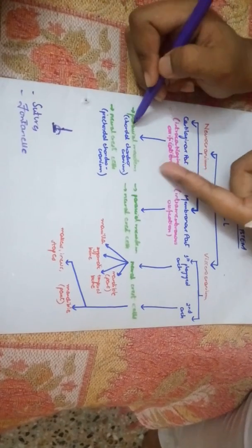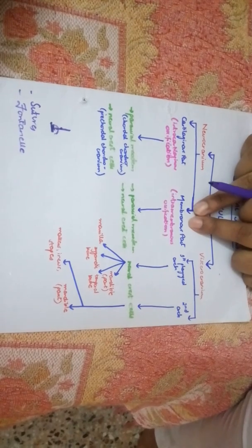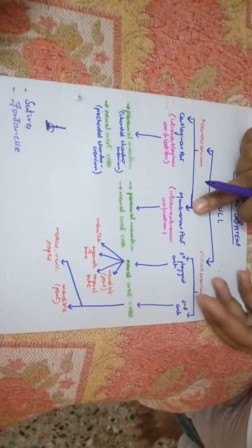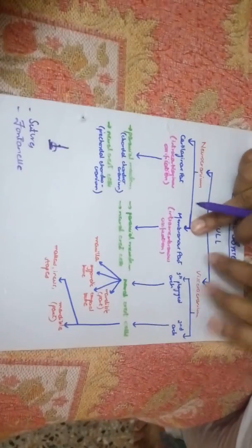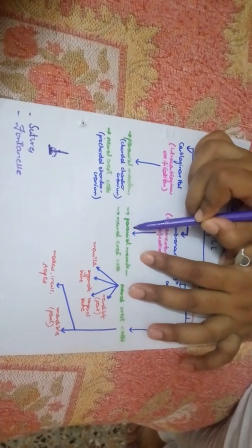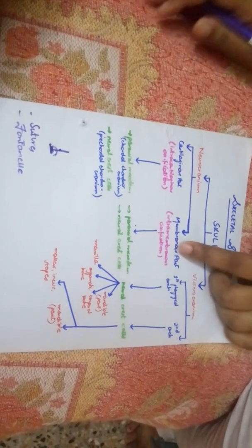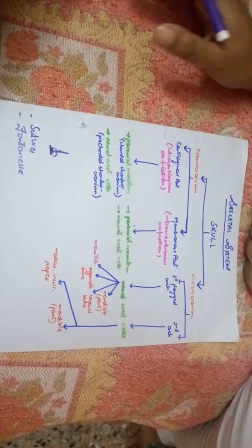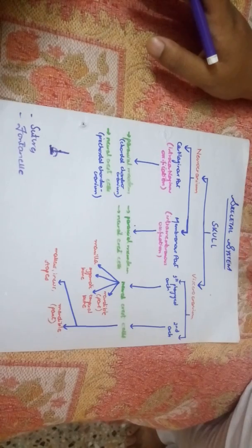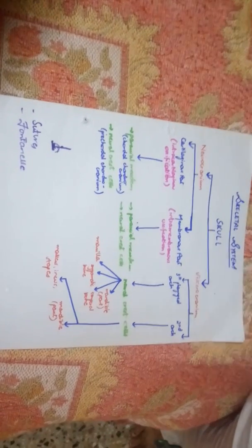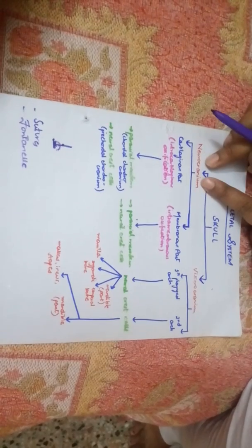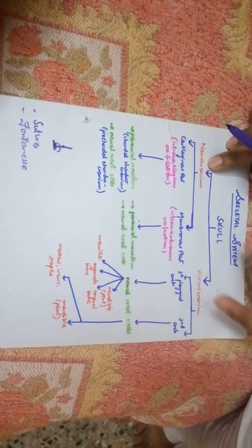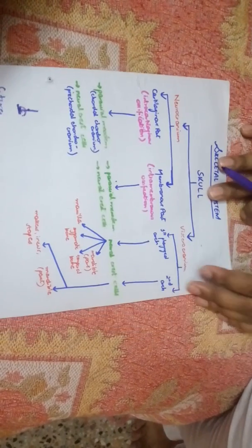On the other side, we have the membranous part, which forms through intra-membranous ossification. Its bones are also not specialized in the book, so you don't have to remember them. Just remember that the bones will form from paraxial mesoderm and neural crest cells. Wherever intra-membranous ossification occurs, it happens for some time, then it calcifies. After birth, it ossifies again and the bones change from the original bones.